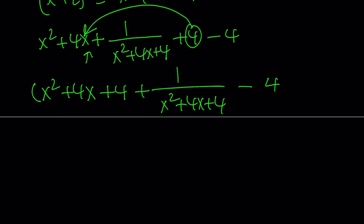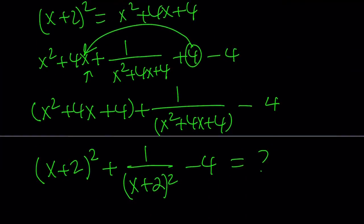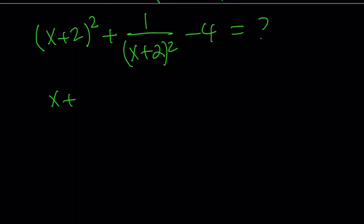So, now take a look at this expression and that expression. They are the same. So, that was my goal. Let's leave it at that. And we can actually write it in a nicer form. Let's go ahead and write this as (x+2)² + 1/(x+2)² - 4. This is what I'm trying to find. So, let's put a question mark.